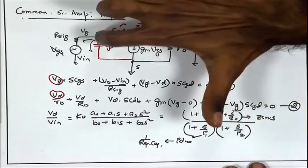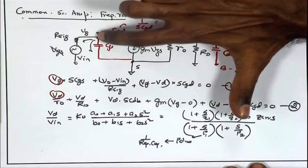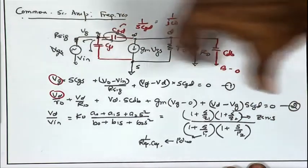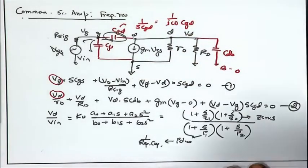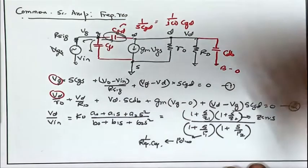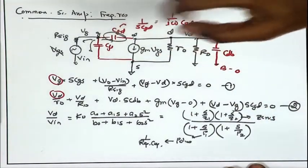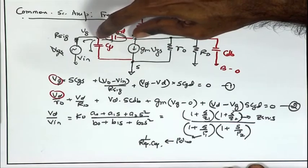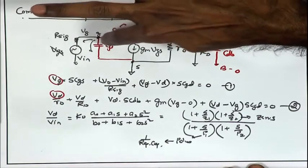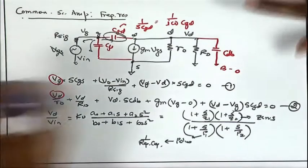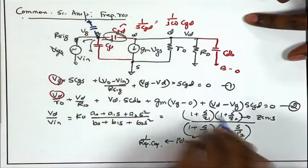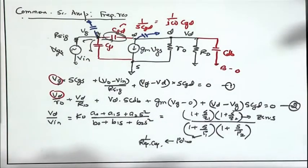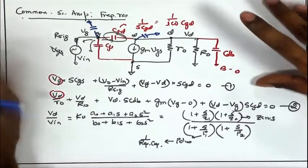If CGD were absent, the equation of the first node would be solvable independently, and based on VG we could get VD independently — decoupling the two nodes and proceeding step by step. That is the main motivation behind using Miller's theorem: to decouple or disconnect the small signal parasitic capacitances connecting two circuit nodes and represent them by equivalent capacitances connected between those nodes and AC ground. We want to get rid of CGD and represent it as an equivalent capacitance between each node and AC ground — that is what Miller effect allows us to do.